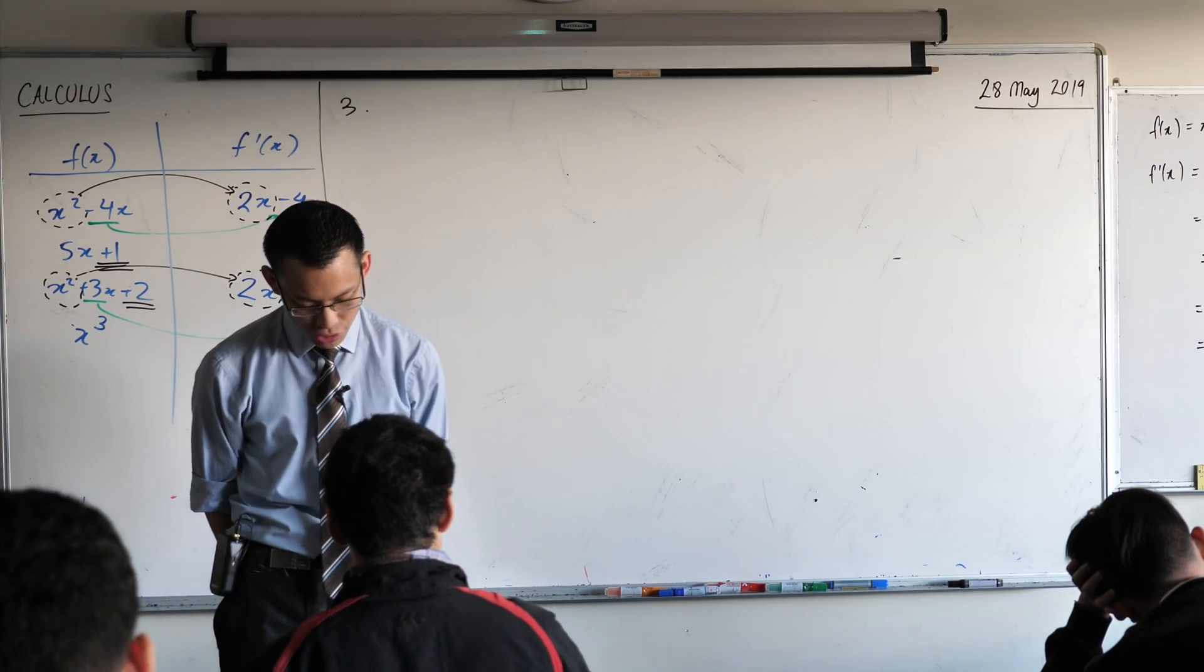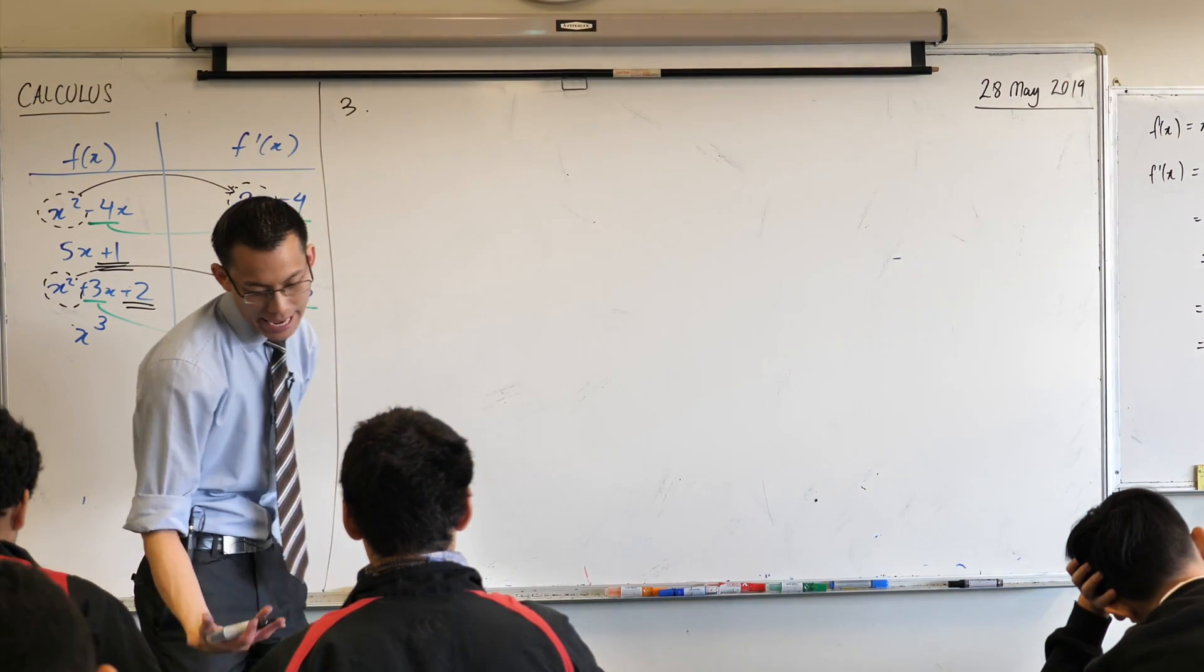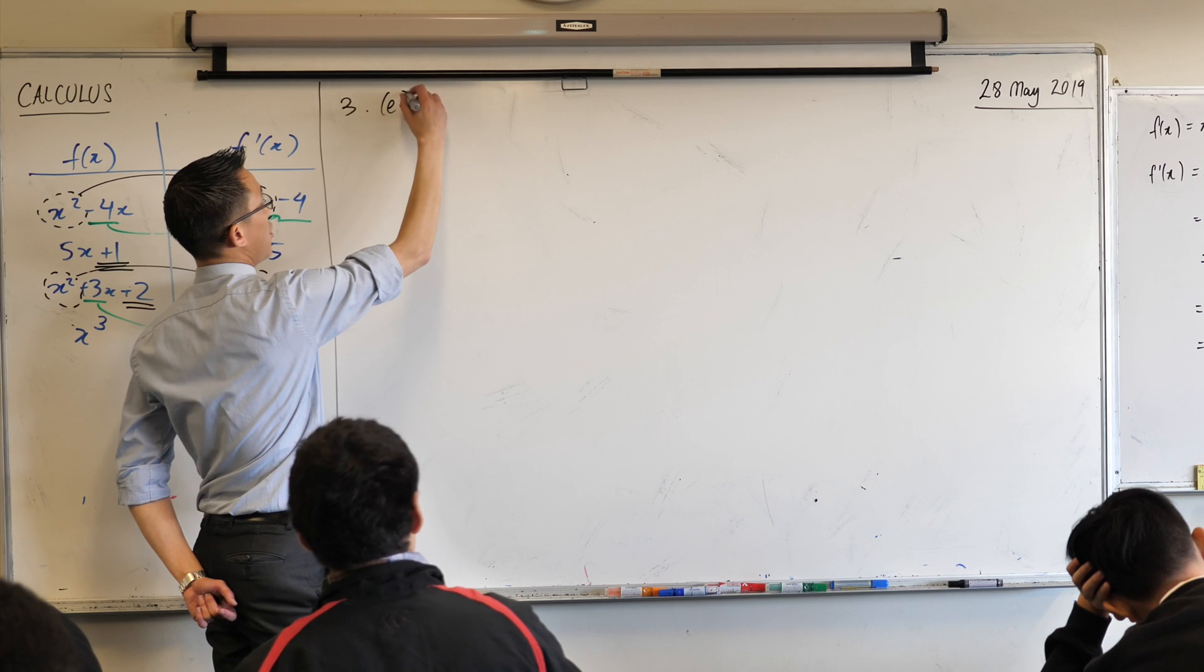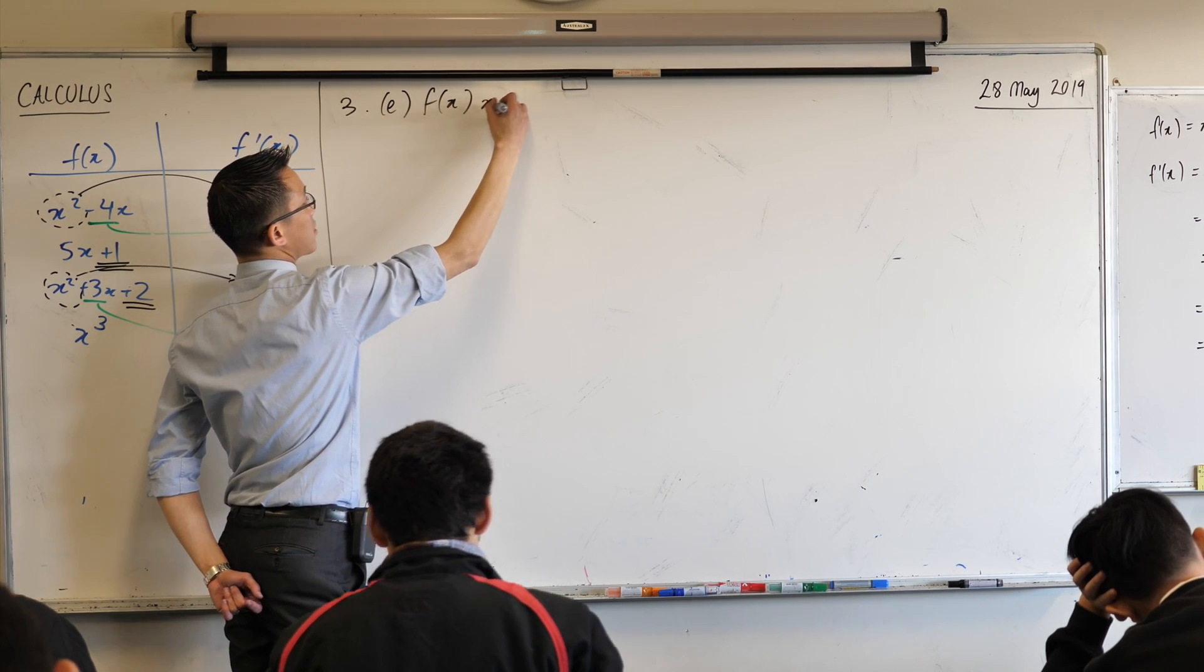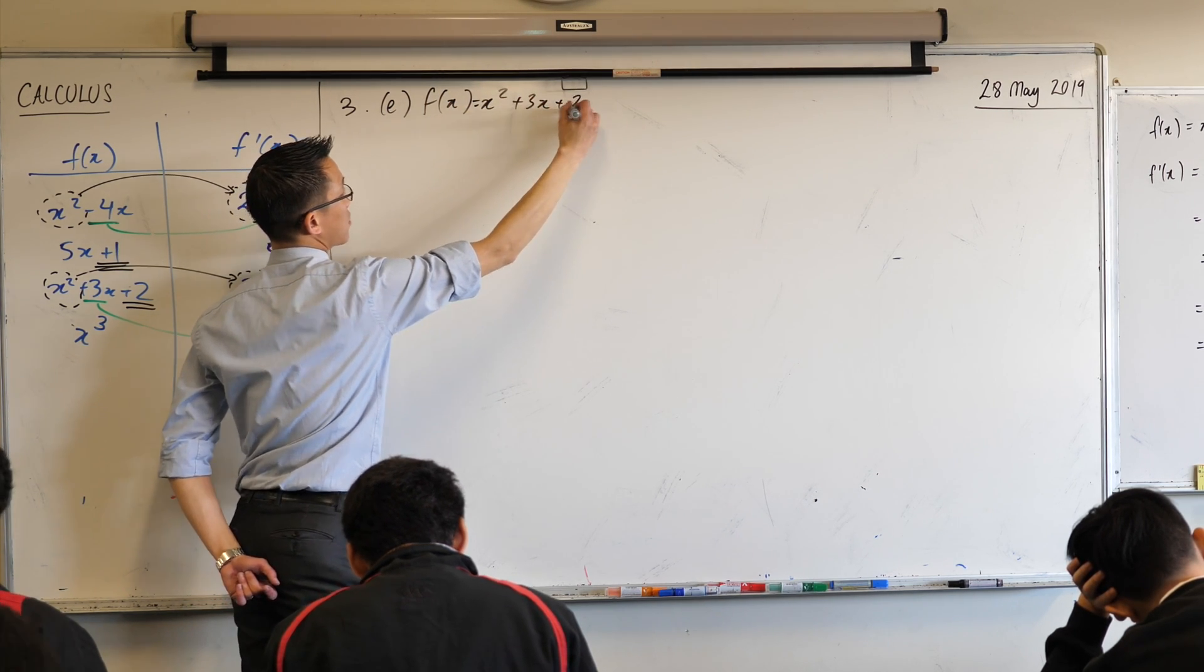For each function in question 2, let's pick e because we did that one, right? So the function was x squared plus 3x plus 2.